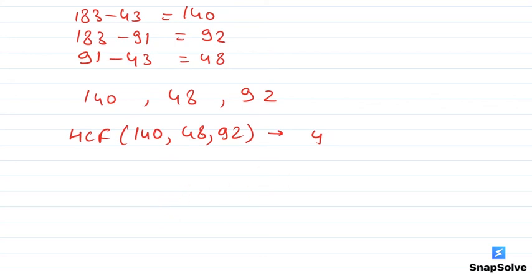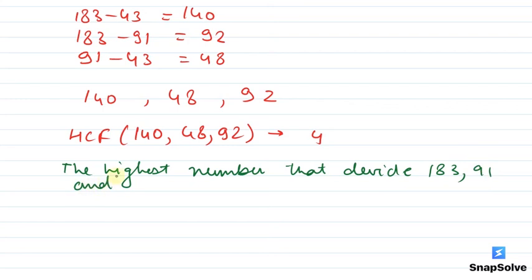So the final answer will be: the highest number that divides 183, 91, and 43 and leaves the same remainder is equal to 4.